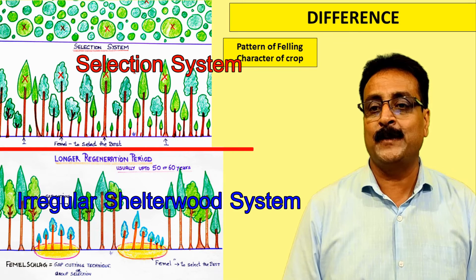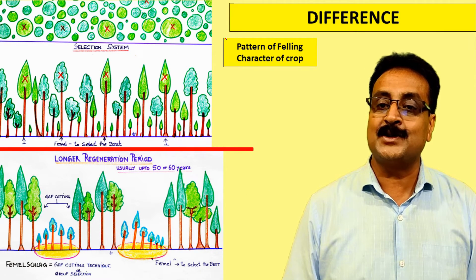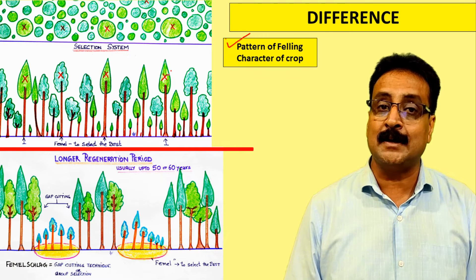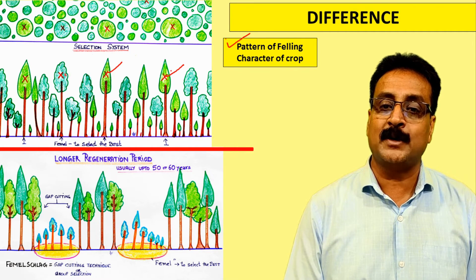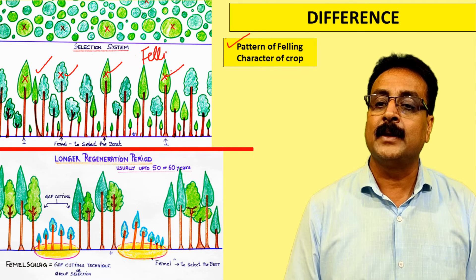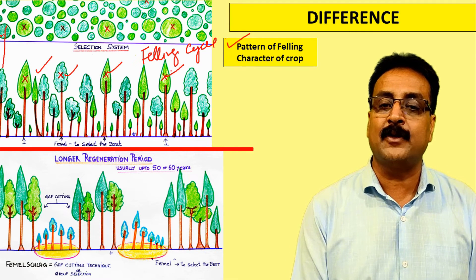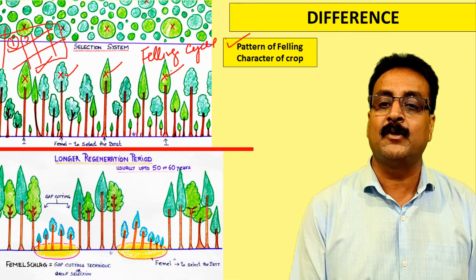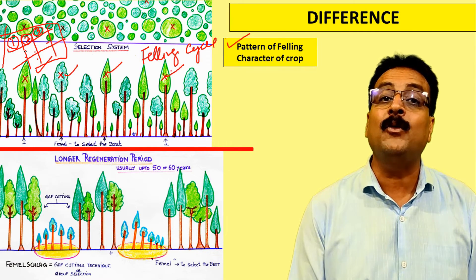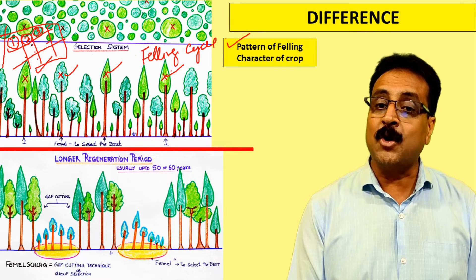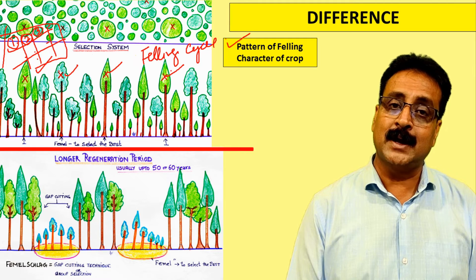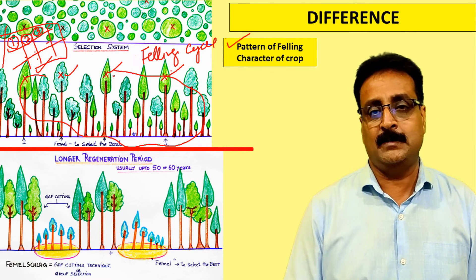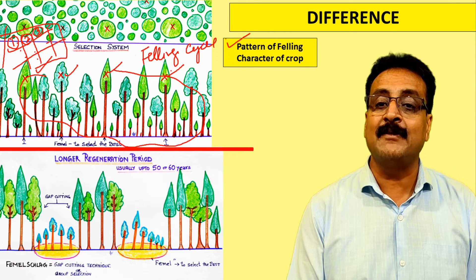Now the difference between the selection system and the irregular shelter wood system. In the selection system, felling is not compartment-based; we select the best exploitable-diameter trees across the forest. We divide the forest into coupes and follow a felling cycle — felling compartment one, then two, then three — but only harvesting exploitable-diameter trees, as all age classes from one year to 150 years are present.